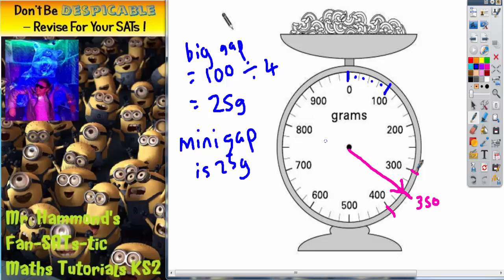Once you know that each mini gap is 25 grams, trying to get 350, the first gap after 300 will be 325, then 350. So that again is a second way of showing you how to get the arrow in the correct place.